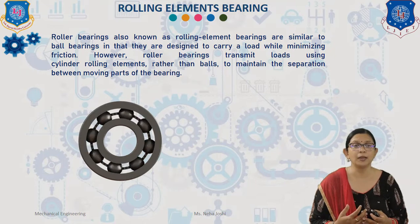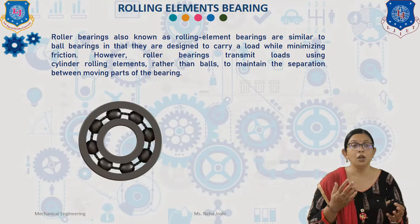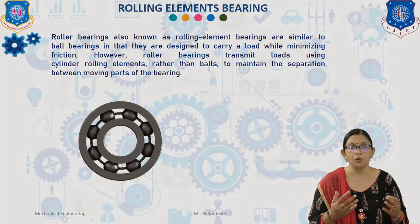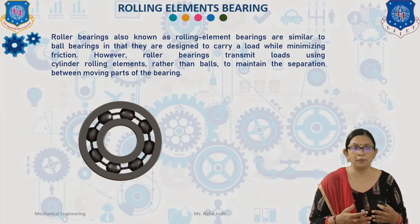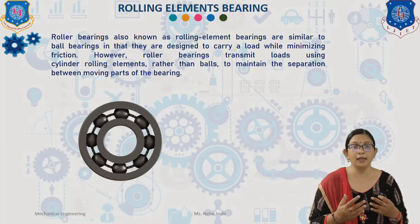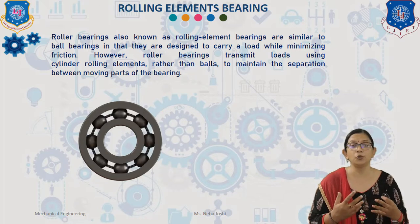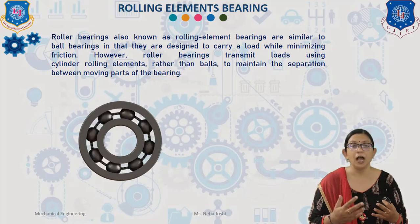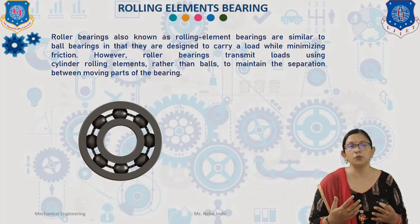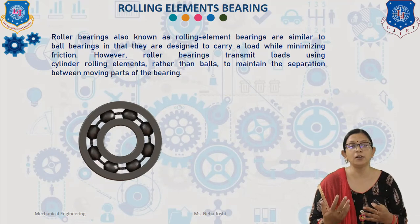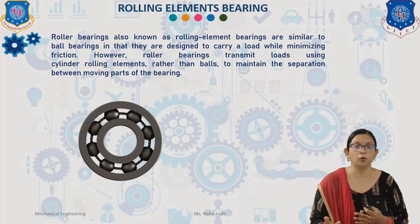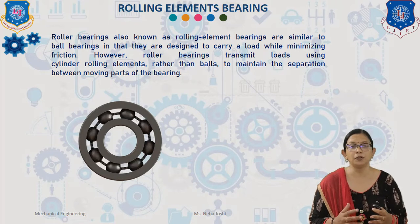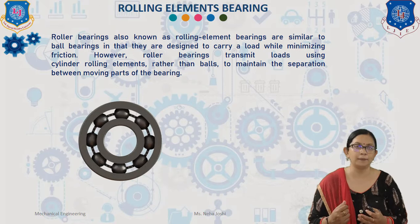First of all, what is rolling element bearing? Rolling element bearing is also known as a roller bearing, which is similar to the ball bearing in that they are designed to carry a load while minimizing friction. However, roller bearings transmit load using cylindrical rolling elements rather than balls to maintain the separation between the moving parts of the bearing.